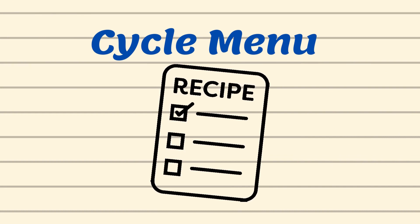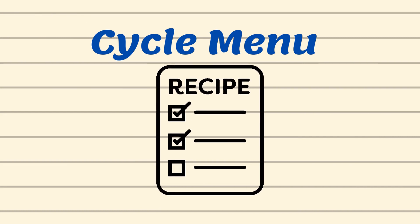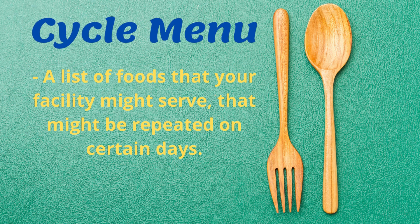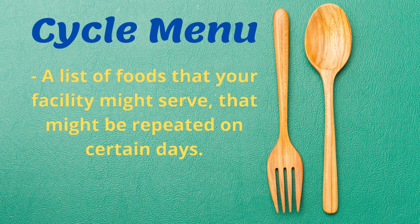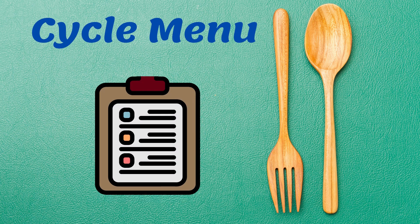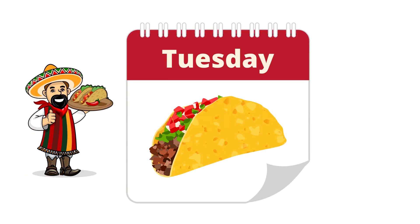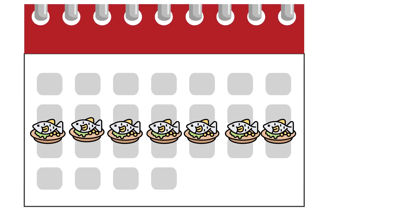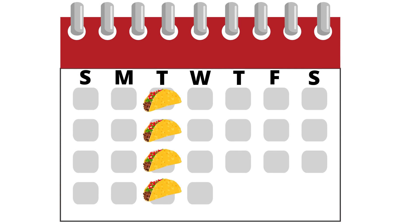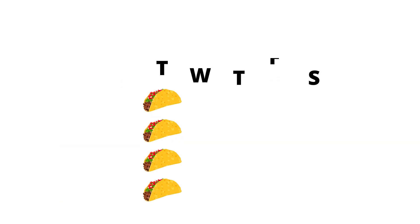So what is a cycle menu? A cycle menu is a list of foods that your facility might serve, and on certain days those foods repeat — for example, Taco Tuesday. A cycle menu might serve within a certain time period, let's say 30 days, a week, or three days, and it repeats certain foods on certain days, like Taco Tuesday, where every Tuesday the facility might serve tacos.